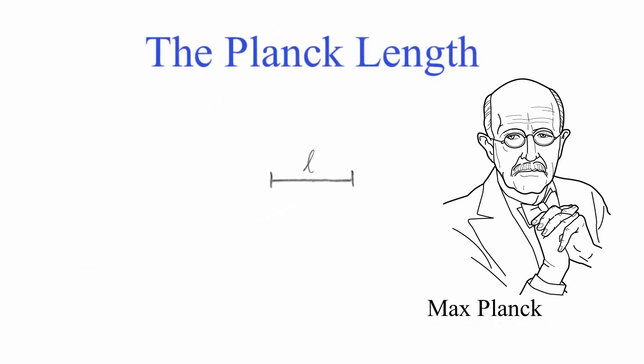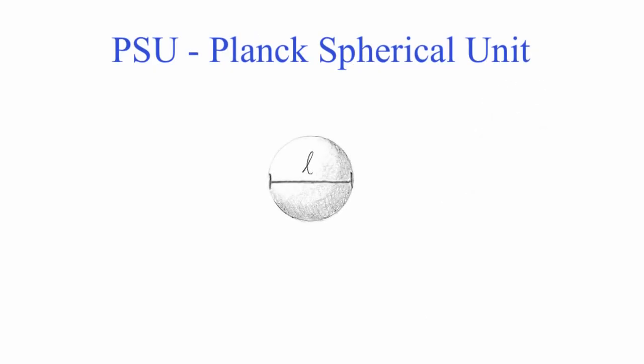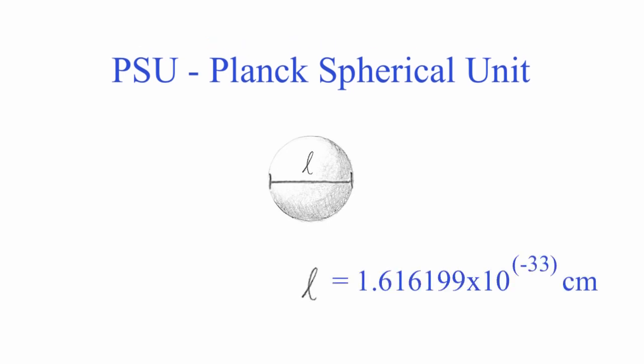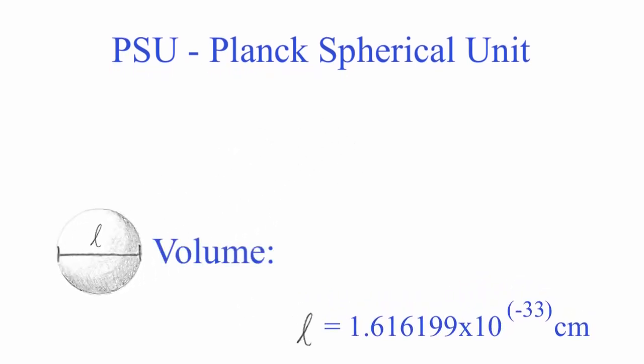Now, if we take this length and we make it the diameter of a sphere, we now have one Planck spherical unit, or one PSU. This is a brand new unit of measurement in the world of science, the Planck spherical unit, the PSU. There are two things we need to know about this PSU before we can continue: we need to know its volume and its circle area, basic geometry.